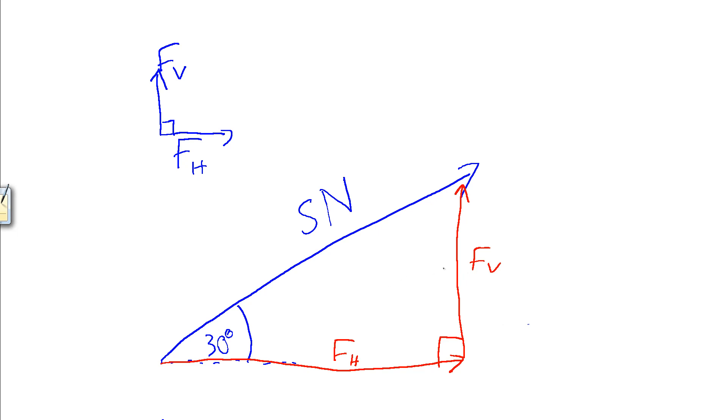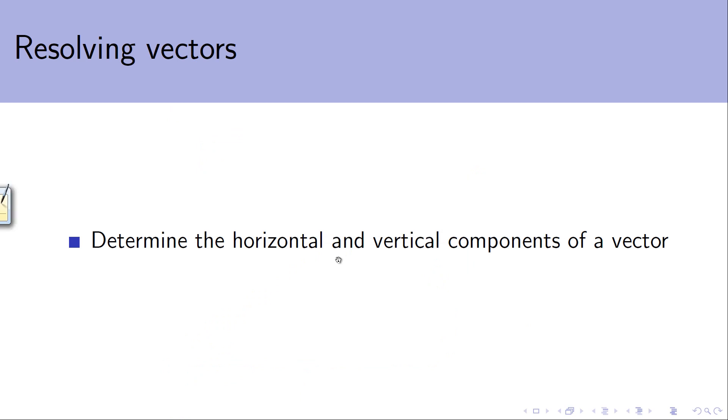So, if we take this 30 degrees, we can label up this triangle. Over on this side, we've got our opposite side, we've got our adjacent down here, and we've got our hypotenuse up here.